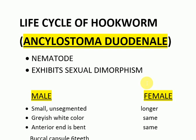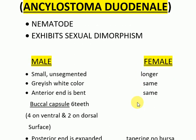Life cycle of hookworm and Ancylostoma duodenale. It is a nematode and it exhibits sexual dimorphism. Sexual dimorphism is a condition in which the two sexes of the same species exhibit different characteristics other than the sexual differences. These worms are small and unsegmented.